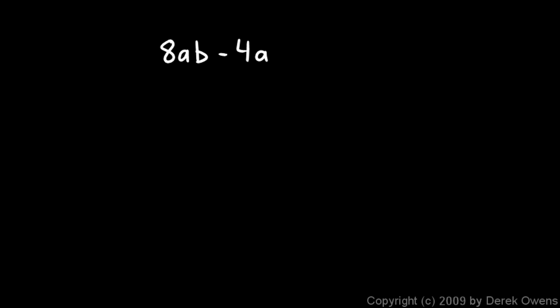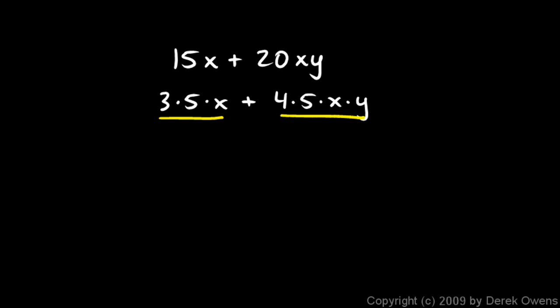OK, next example is 15x plus 20xy. OK, I'm going to break this up into pieces. 15x could be written as 3 times 5 times x. And then 20xy could be written as 4 times 5 times x times y. Now what common factors do we see in this term and this term?